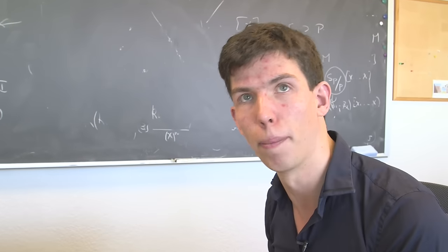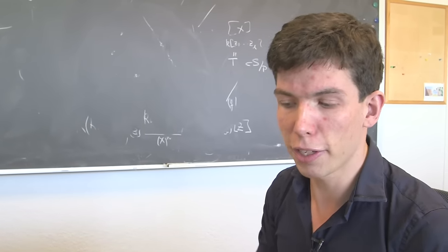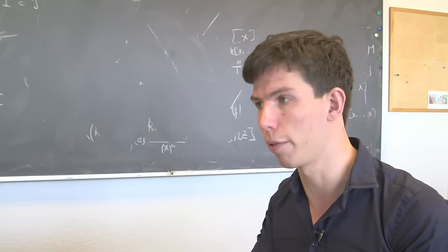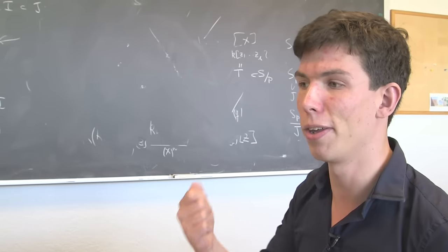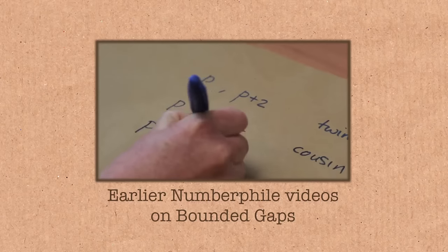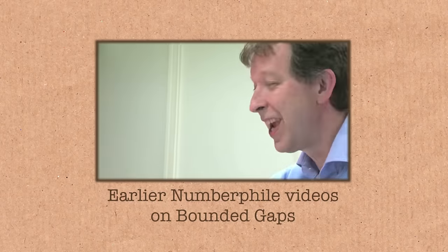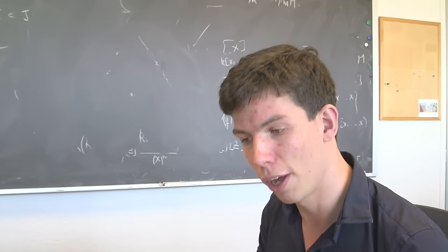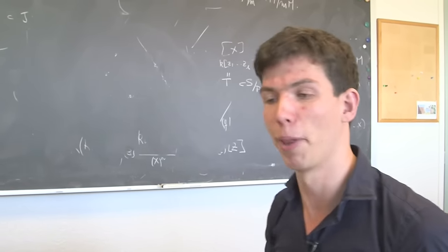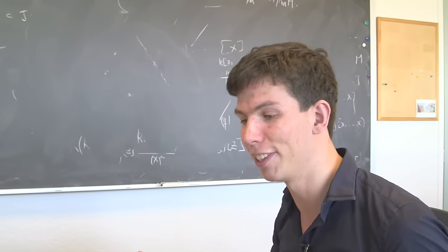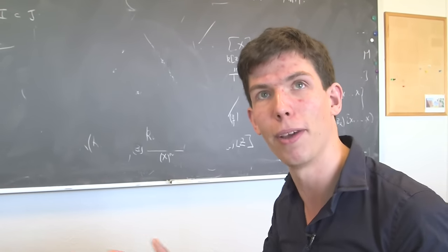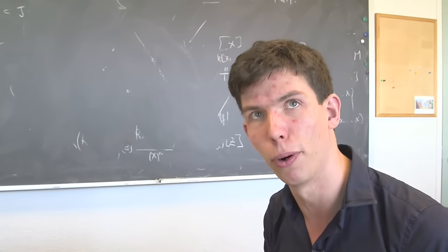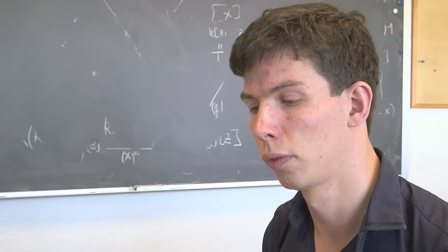70 million is a slightly arbitrary number that comes out of the method. In fact, his method showed some number and he didn't try to optimize the 70 million too much. If you take his arguments but are slightly more careful with numerical calculations, you can bring 70 million down to 30 million. If you tweak his arguments and rearrange things, it's still fundamentally the same argument, but you can bring 30 million down to 20 million. As soon as Zhang's result came out, there was huge excitement at trying to understand it, but there also became a small online competition amongst mathematicians as to how low can you make the gap.